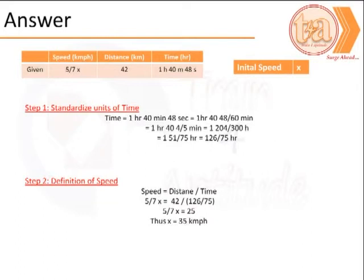The first step is to standardize the units of time. 1 hour, 40 minutes and 48 seconds would come to around 126/75 hours.